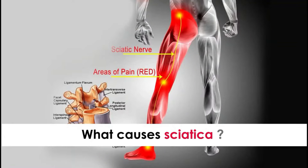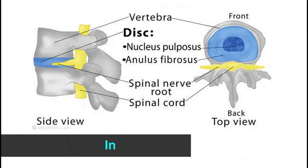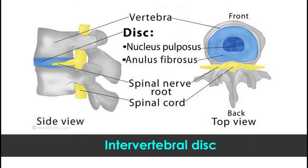What causes sciatica? Sciatica is low back pain because of a slip disc compressing on the nerve. Sciatica is because of a disc within your spinal cord — what you call an intervertebral disc. Because of degeneration and various causes, it comes out, which is called a prolapse. This compresses the nerve root and causes pain along your leg.